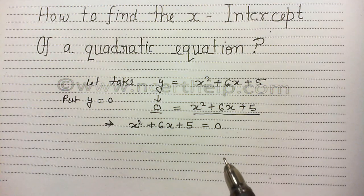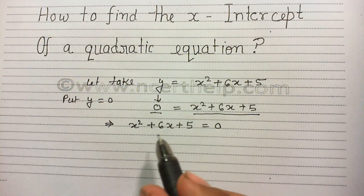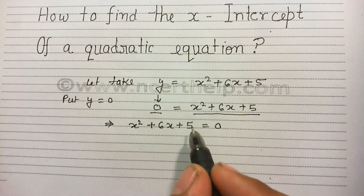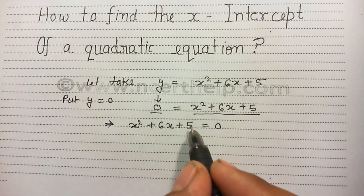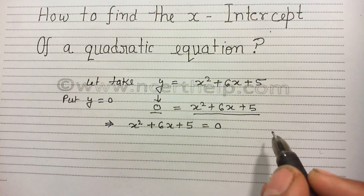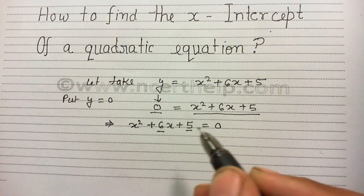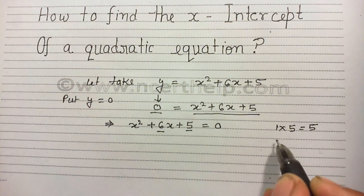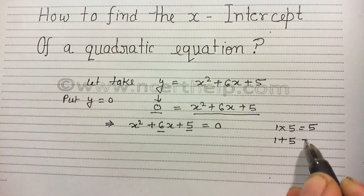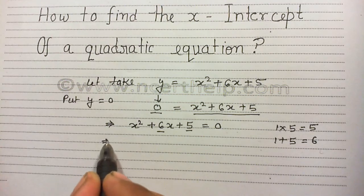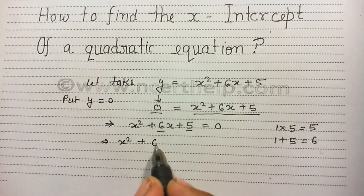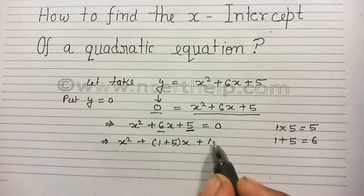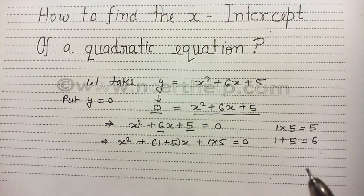Here, coefficient of x is 6 and constant term is 5. We need two numbers whose product is 5 and sum is 6. We know that 1 times 5 gives me 5 and 1 plus 5 gives me 6. So I can write this middle term as 1 plus 5 and this constant term as 1 times 5.